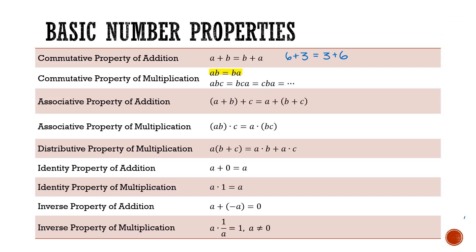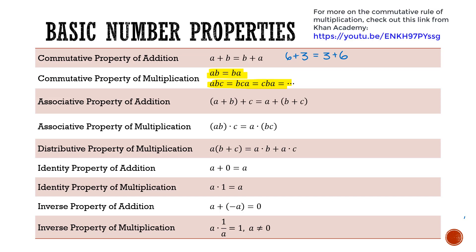Next we have the commutative property of multiplication, listed in two different forms. Once again, the commutative property implies that order doesn't matter. So a times b is the same as b times a. Or we could have a times b times c, which is the same as b times c times a, or any variation. As a numeric example, 3 times 5 times 10: doing it in order gives 3 times 5 is 15, times 10 is 150. This is the same as 5 times 10 times 3, giving 50 times 3, which is still 150. The order of multiplication does not matter.